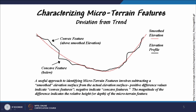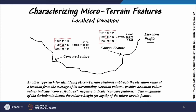Here the smooth or generalized elevation is shown, and at some places there are convex features above the smooth elevation and concave features below the smooth surface. The black line shows the actual topographic or elevation profile. This is useful to identify micro terrain features by subtracting a smoothed elevation surface — that is, the average elevation surface — from the actual elevation surface, giving basically the surface roughness or micro terrain features along a line or polyline.